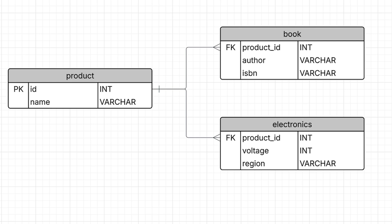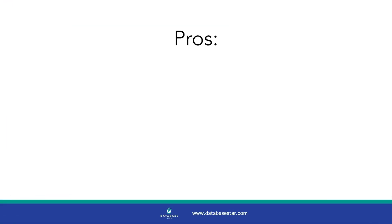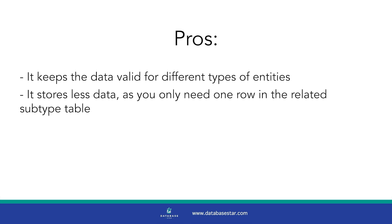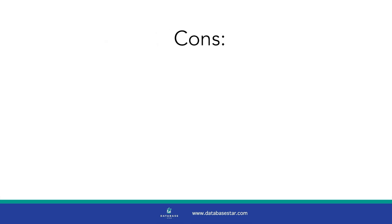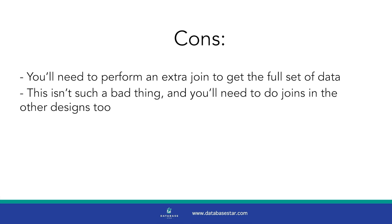This type of design is best when you have different types of entities but you have some shared attributes. The benefits are that it keeps the data valid for different types of entities, it stores less data as you only need one row in the related subtype table, and it enforces data types to improve data quality. The drawback is that you'll need to perform an extra join to get the full set of data, though you'll need to do joins in the other designs too.